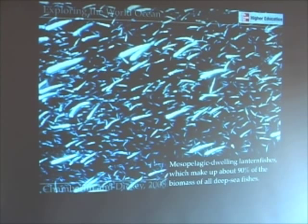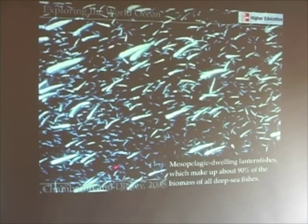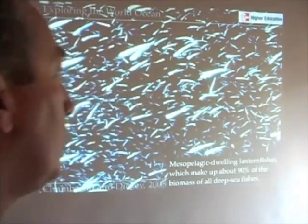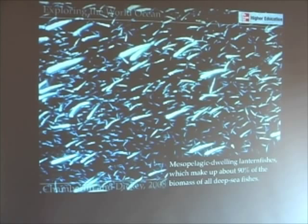Here's a picture from NOAA of what are called lantern fishes — they're called lantern fishes because they light up. These mesopelagic-dwelling lantern fishes make up about 90% of the biomass of all deep sea fishes. So here in the mesopelagic or twilight zone, this particular kind of fish is really abundant compared to all the fish we find in the deep sea, from the bottom of the epipelagic zone deeper.